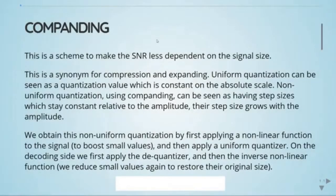Previously we've seen that the signal-to-noise ratio depends not only on the signal type but also on the signal size. Companding is a scheme to make the SNR less dependent on the signal amplitude. It means compression and expanding. Uniform quantization has a constant step size on the absolute scale, whereas non-uniform quantization using companding has step sizes that stay constant relative to the amplitude — so the step size grows with the amplitude.